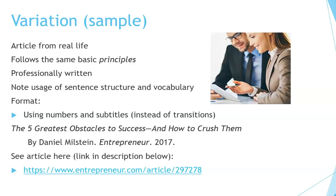It's published in an online magazine. Note the usage of sentence structure and vocabulary. It follows the same basic format, but instead of using transition words between the paragraphs, it uses numbers and subtitles. The title of this article is 'The Five Greatest Obstacles to Success and How to Crush Them' by Daniel Milstein.